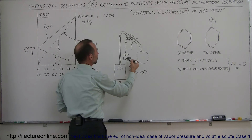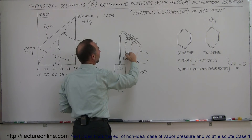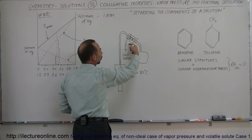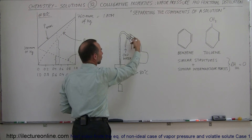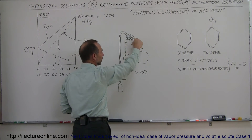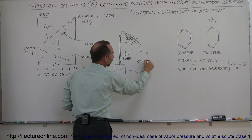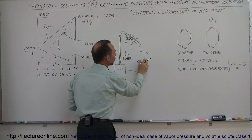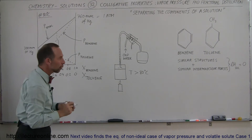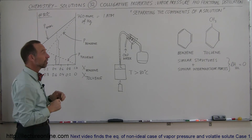What you do next is cool the vapor down — typically by passing it through a container with cold water circling around it — so the vapor turns back into a liquid and fills a collection container. Most of that collected liquid will be benzene and just a small amount of toluene. That's called fractional distillation.